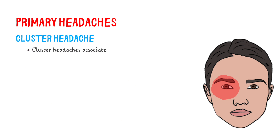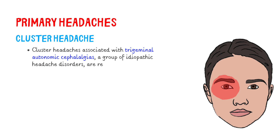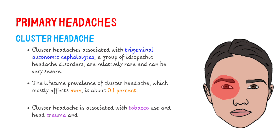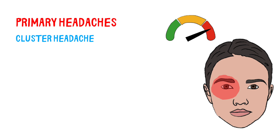Cluster headaches, associated with trigeminal autonomic cephalalgias — a group of idiopathic headache disorders — are relatively rare and can be very severe. The lifetime prevalence of cluster headache, which mostly affects men, is about 0.1%. Cluster headache is associated with tobacco use and head trauma and seems to have a genetic component in some families. Cluster headaches are of a very severe nature and depression is very common among people suffering from this condition. Patients may describe these headaches as like being stabbed with a knife.